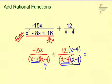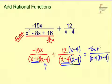So now when we add fractions, that common denominator we found, x minus 4, x minus 4, will stay as it is. And we're going to add our numerator, so negative 15x plus 12 times x minus 4.